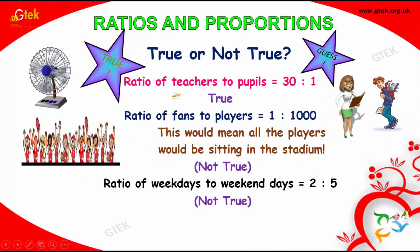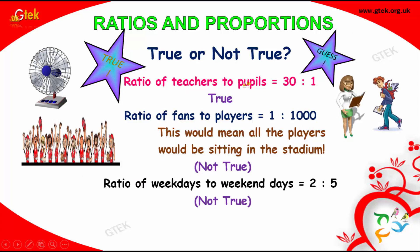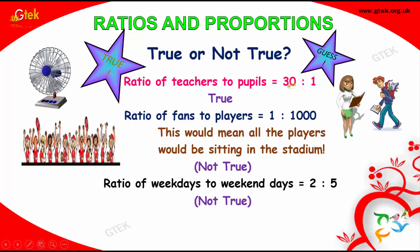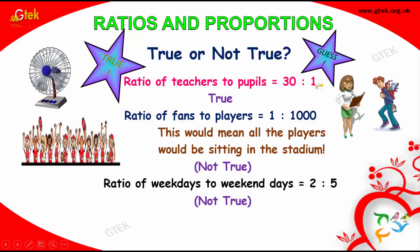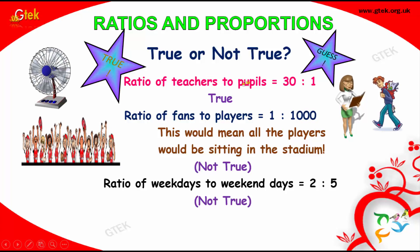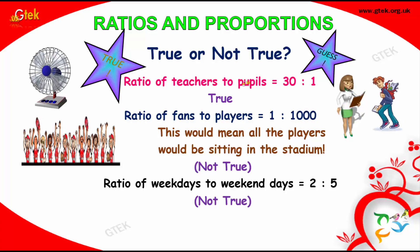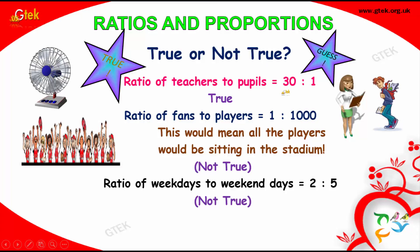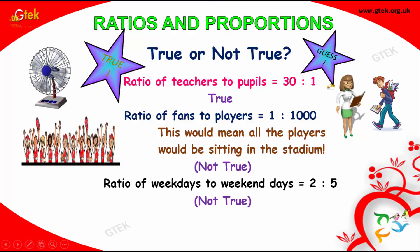Let's see: ratio of teachers to pupils to students is 30 is to 1. Is it true? Yes, 30. Let's see ratio of teachers to pupils — is it true? No. The reason is teachers should be more and the pupils should be lesser. So, the option is not true.